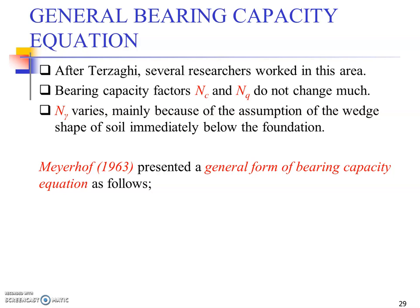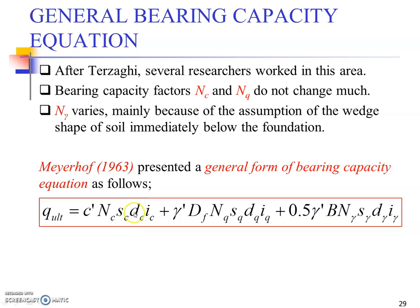Meyerhof, for example, presented a general form of bearing capacity equation. He incorporated new factors involving the depth factor and the inclination factor for the foundation. If you see the rest of the factors, Sq is a shape factor related to the overburden portion of the bearing capacity. This new factor is incorporated, then the depth factor Dq and I factor is the inclination factor for the overburden.